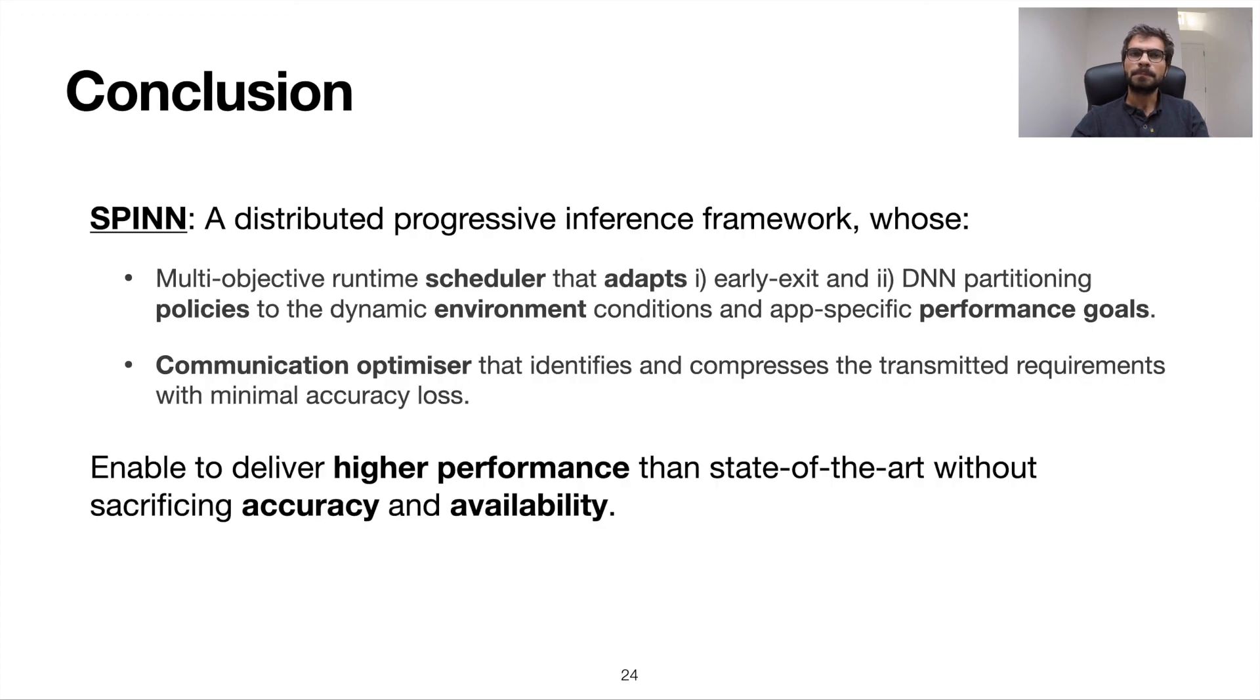In summary, we have presented Spin, a distributed system that enables robust CNN inference in highly dynamic environments while meeting multi-objective application level requirements. This is accomplished through a novel scheduler that takes advantage of progressive inference. The scheduler optimizes the overall execution by jointly tuning both the split point selection and the early exit policy at runtime to sustain high performance and meet the application SLAs even under dynamic resource fluctuation. The guarantee of a local early exit renders server availability non-critical and enables robust operation even under uncertain connectivity situations. This trait enables Spin to deliver higher performance than state-of-the-art works without sacrificing the system's accuracy or availability. Thank you for your attention.